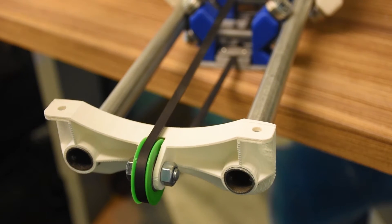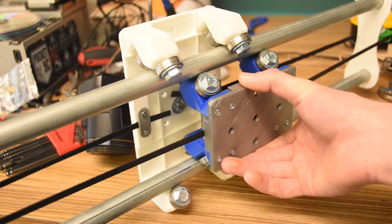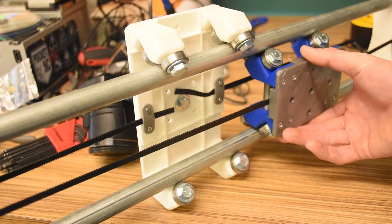And then I've got a toothed belt that I got off of Amazon. It's typically used for things like positioning of 3D printers, scanners, and whatnot.